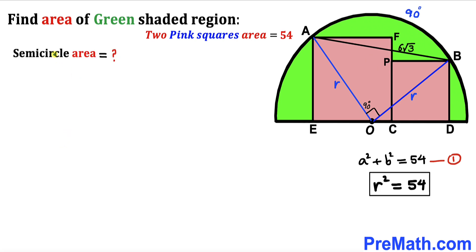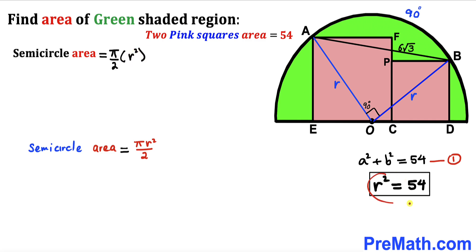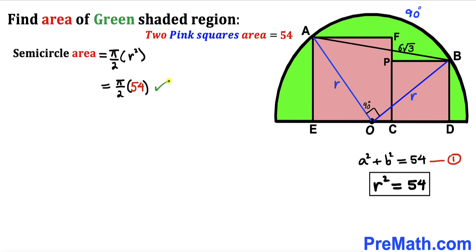Now we calculate the area of the semicircle. Recalling the circle area formula — area = πr² — the semicircle area is πr²/2, which equals (π/2) × r². Substituting r² = 54, the semicircle area simplifies to 27π.